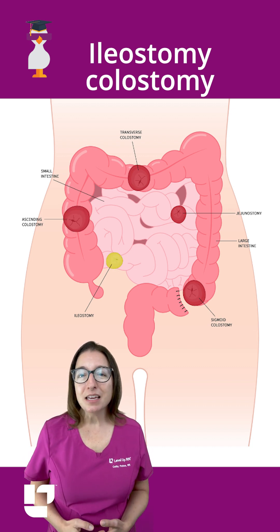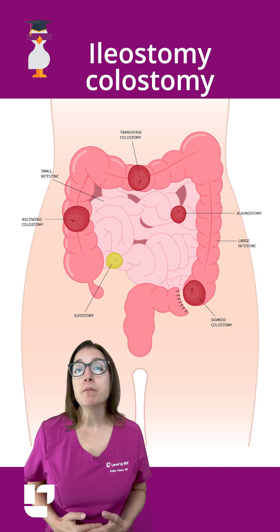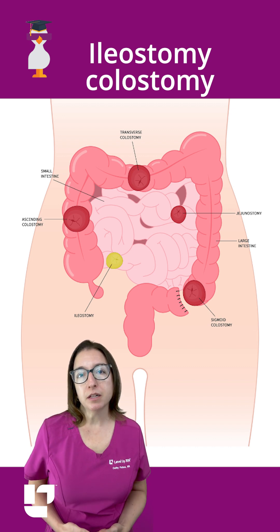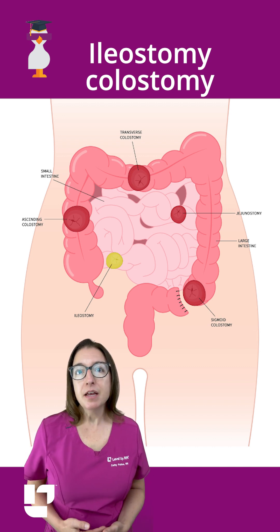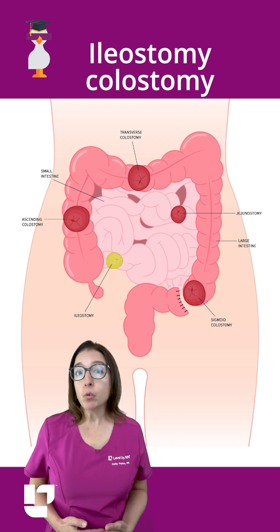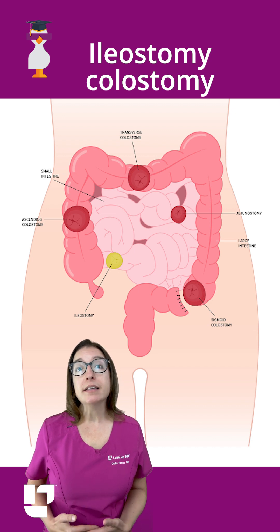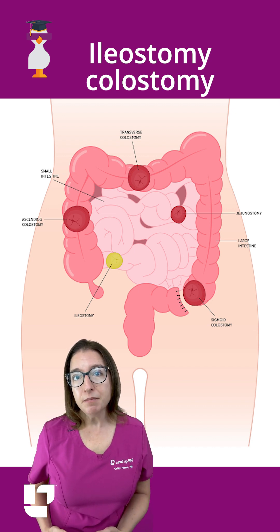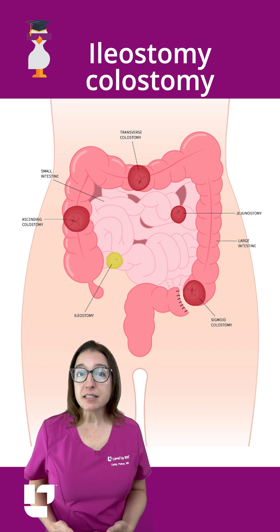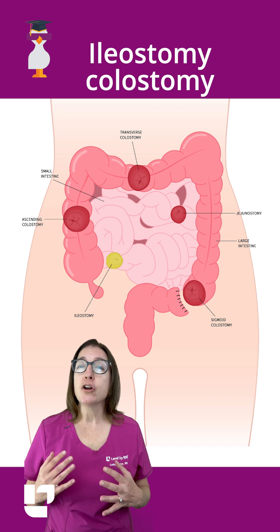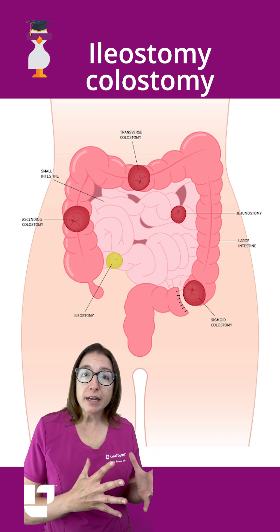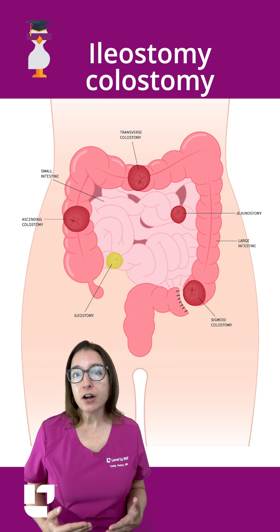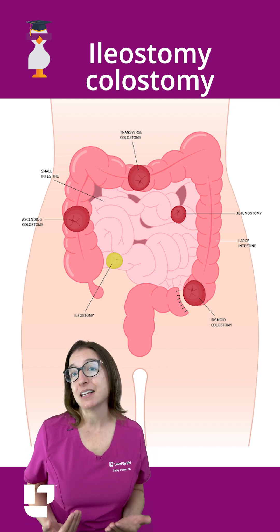An ileostomy is created from the ileum, which is the last part of the small intestine. The stoma will be located in the right lower quadrant of the abdomen. Output from an ileostomy will start off watery, but over time often becomes thicker and more paste-like. Thank you.